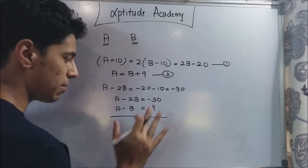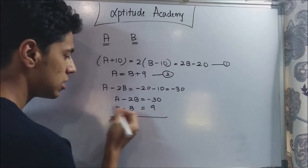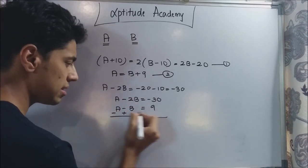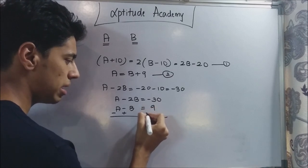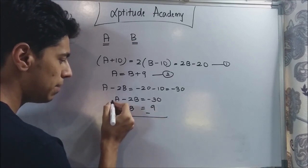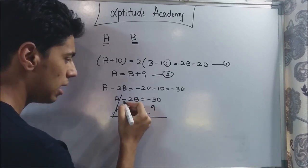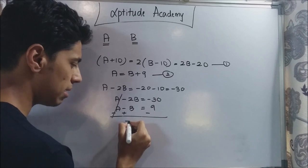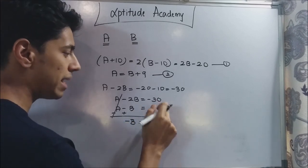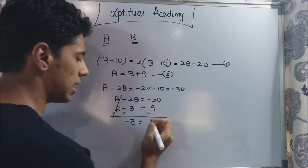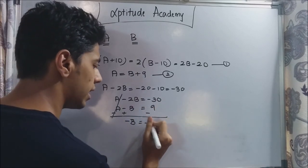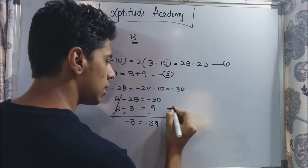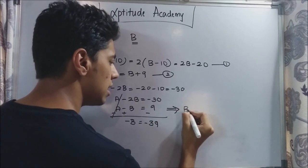Subtracting the second equation from the first to eliminate a: minus 2b plus b gives minus b, and minus 30 minus 9 gives minus 39, so minus b equals minus 39, which implies b equals 39.